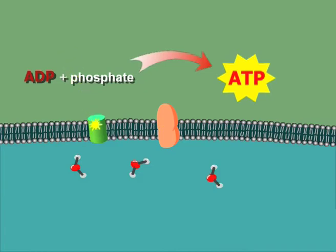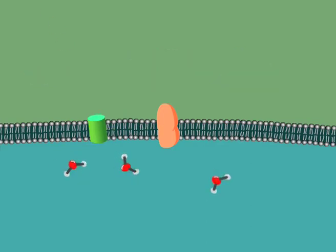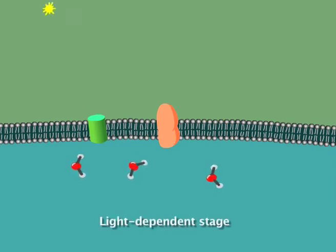Remember that ATP is the cell's portable energy carrier, and we'll see in a moment where the energy gets used in photosynthesis. This first part of photosynthesis is known as the light-dependent stage because, without light energy, it won't happen.